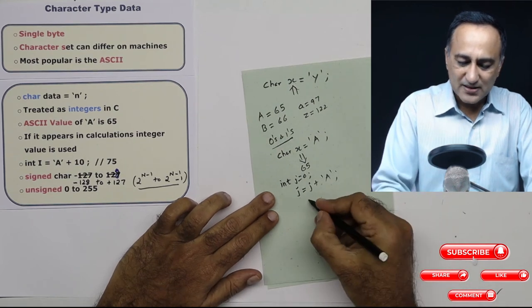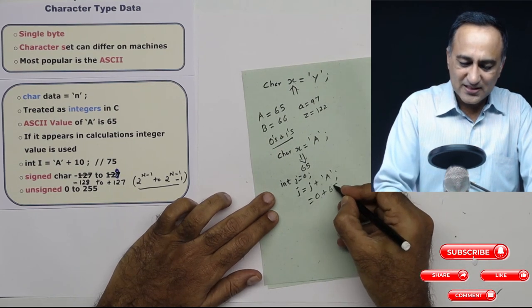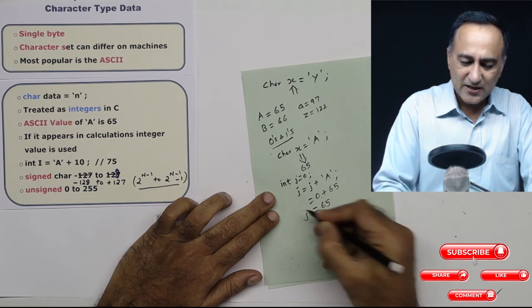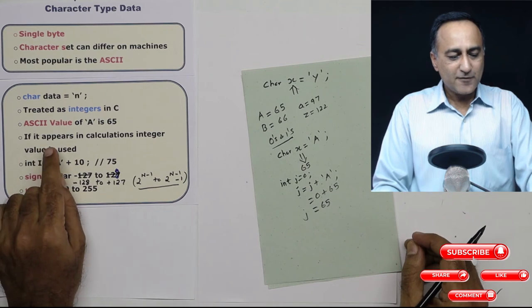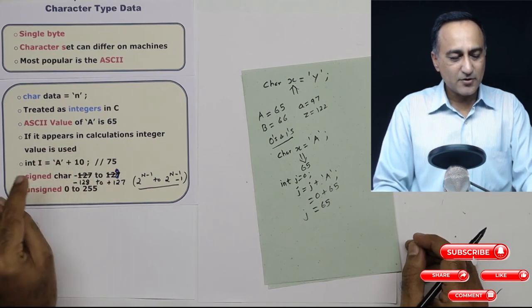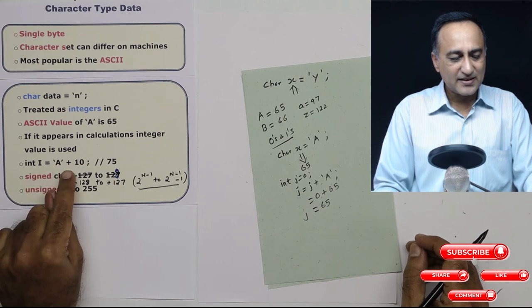What will happen is it will add 0 plus 65. So j will end up becoming now 65. So if a character appears in calculations, it is treated as integers. For example, int i have declared it as character a plus 10.